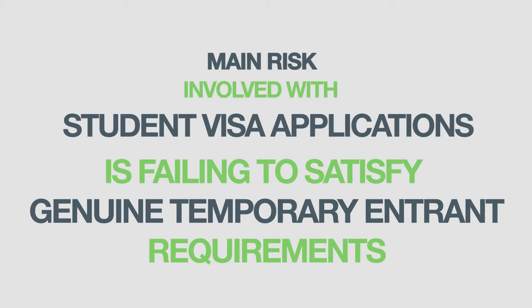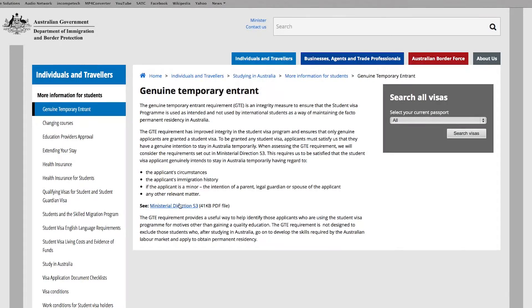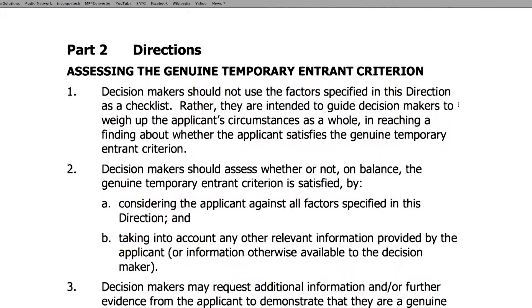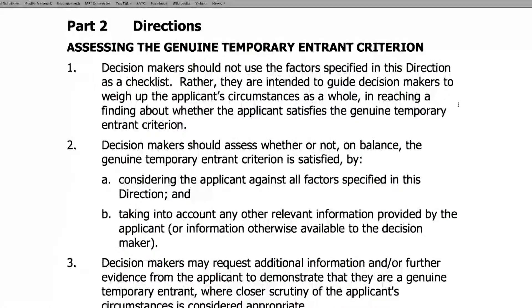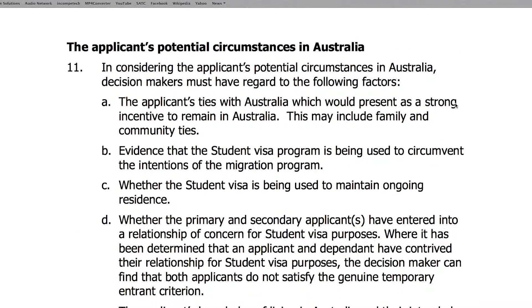The main risk involved with a student visa application is the applicant failing to satisfy the Genuine Temporary Entry requirements. If the applicant is refused on GTE grounds and is thinking of reapplying, the applicant must provide as much supporting evidence as they can to satisfy the case officer that they are a genuine student applicant.